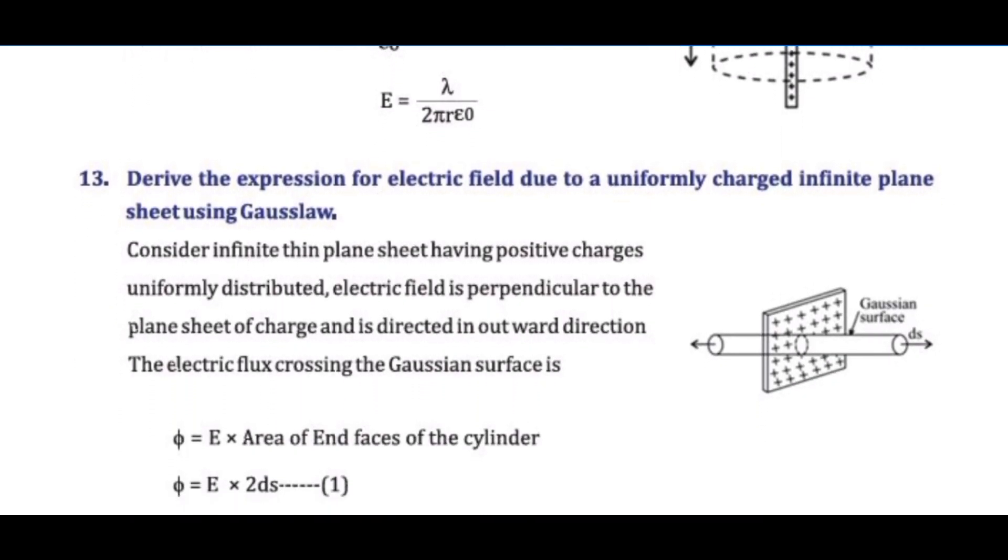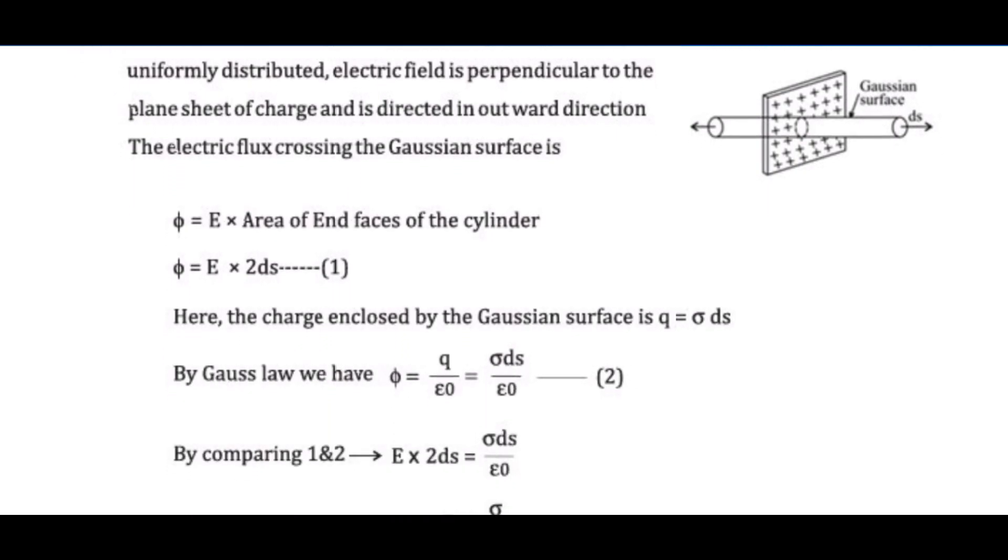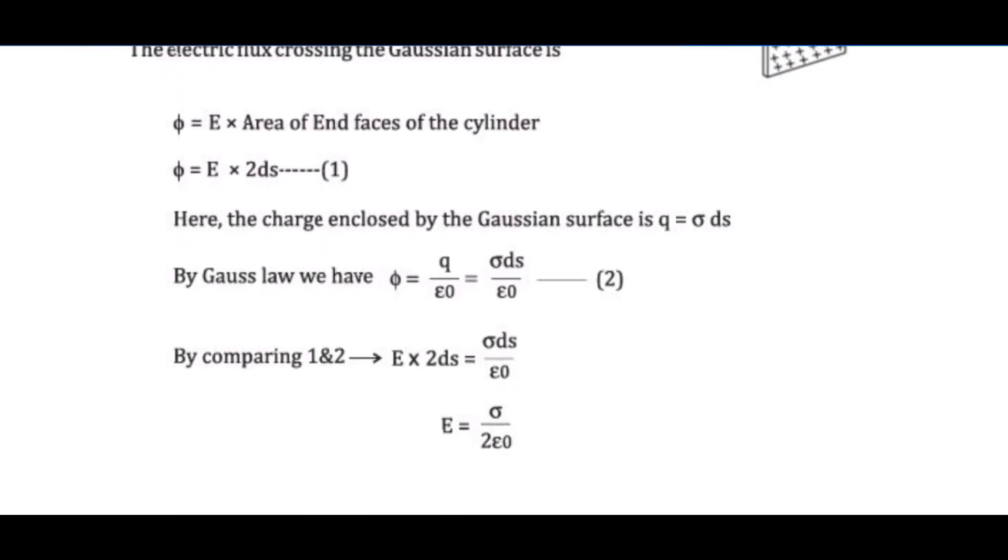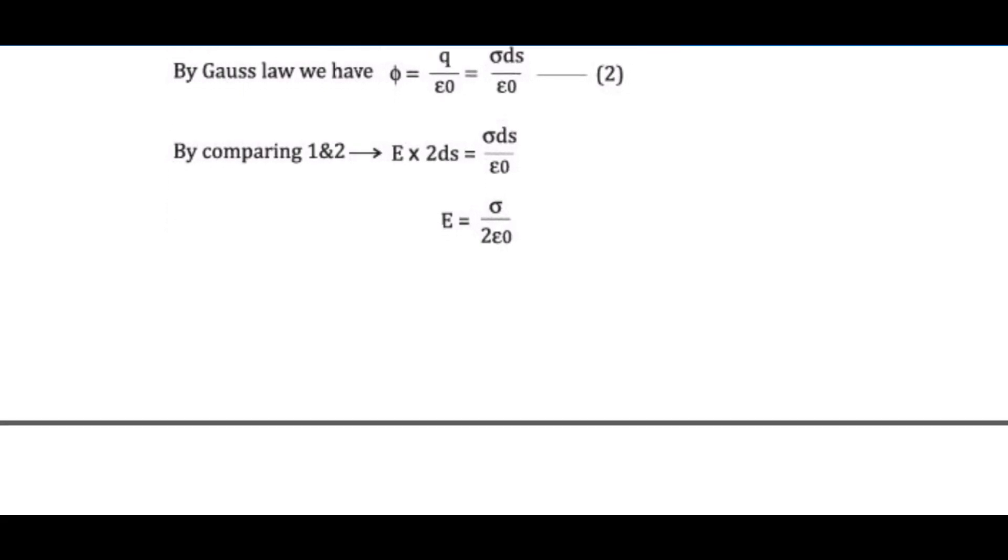Question 13: Derive the expression for electric field due to a uniformly charged infinite plane sheet using Gauss law. To be derived using Gaussian pillbox. E equals sigma over 2 epsilon 0, where sigma